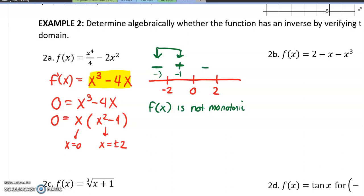So f of x is not monotonic. If we continue to this, I believe this goes negative and this goes positive. That's not a guarantee that that's always going to happen, but it happened in this example.